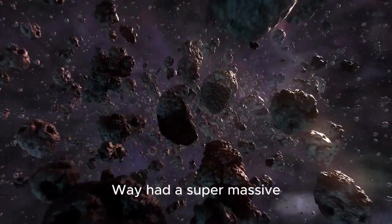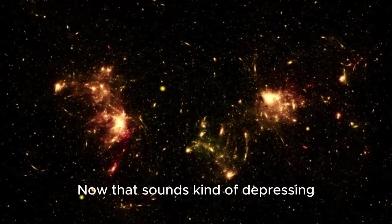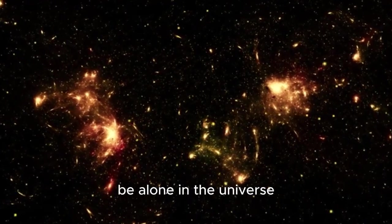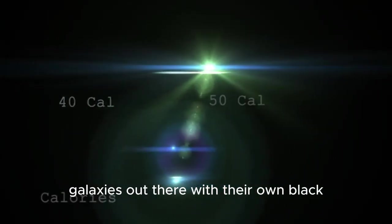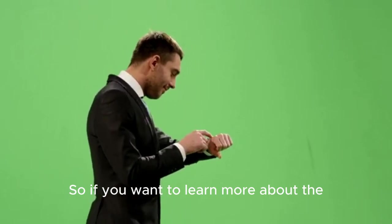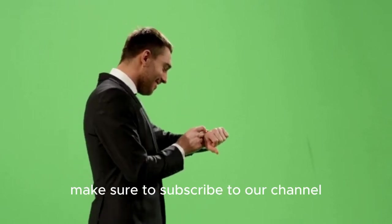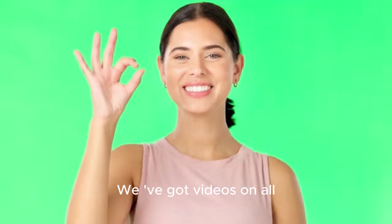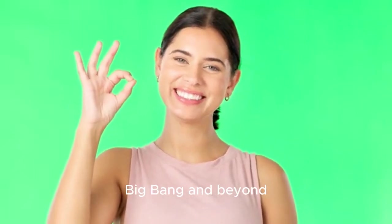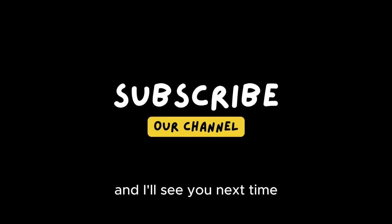So basically, if the Milky Way had a supermassive black hole at its center, we would all be doomed. Now that sounds kind of depressing, but hey, at least we wouldn't be alone in the universe. There are plenty of other galaxies out there with their own black holes, and maybe, just maybe, they have their own YouTube channels too. So if you want to learn more about the universe and all the crazy things that happen in it, make sure to subscribe to our channel. We've got videos on all kinds of topics, from black holes to galaxies to the Big Bang and beyond. And we're always adding new videos every week. Thanks for watching, and I'll see you next time.